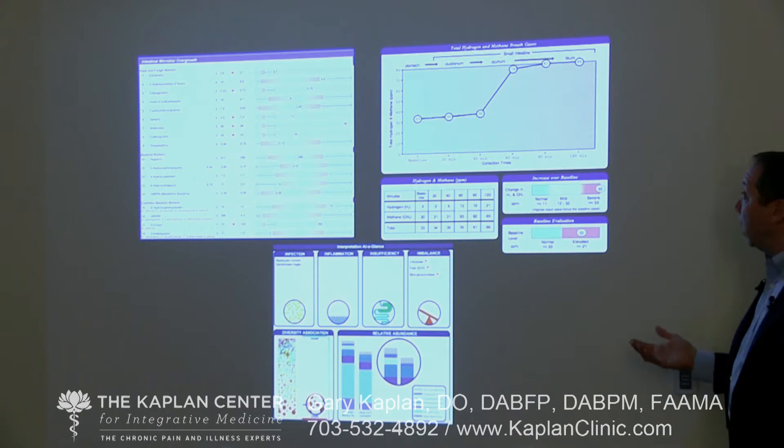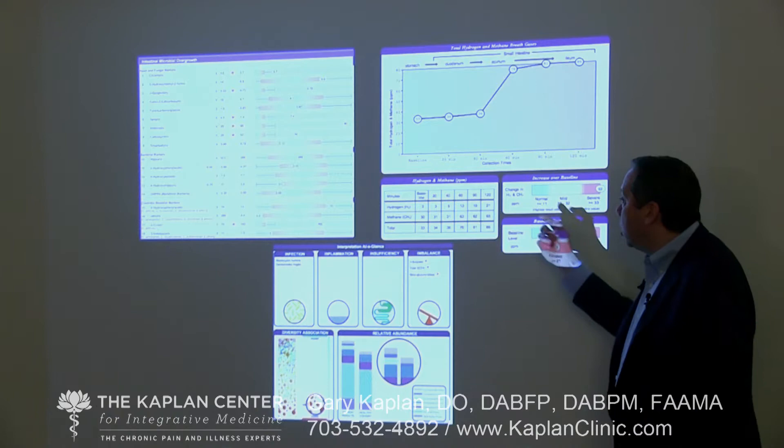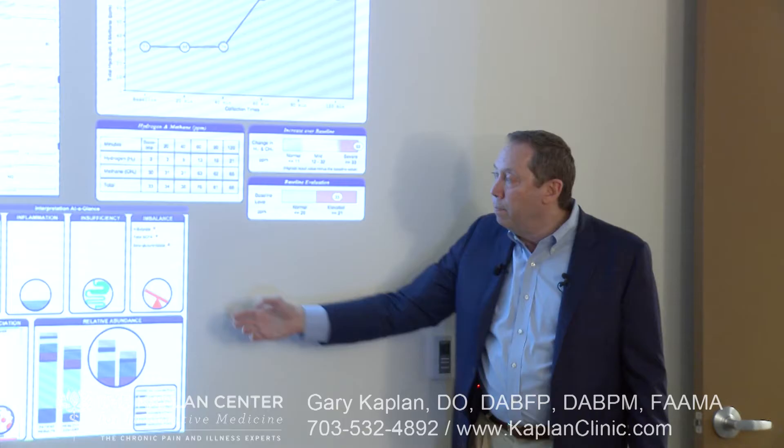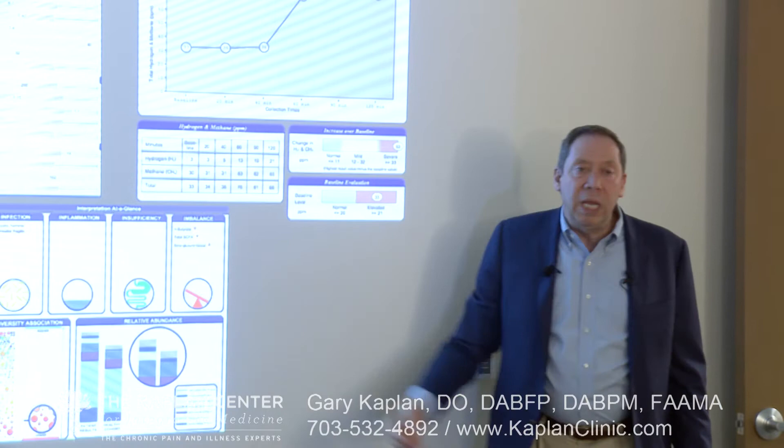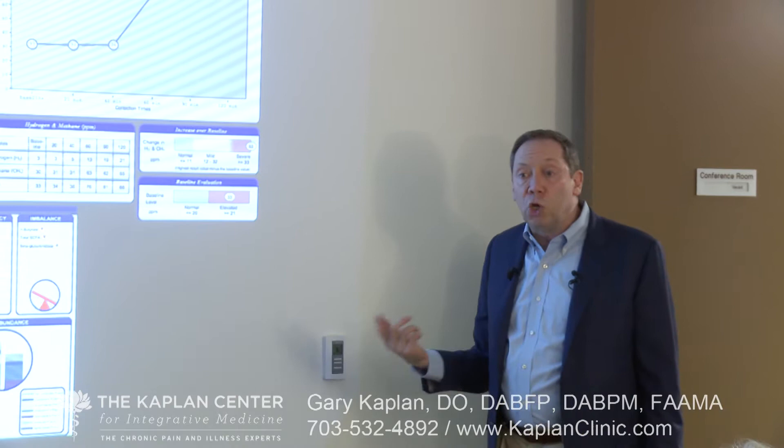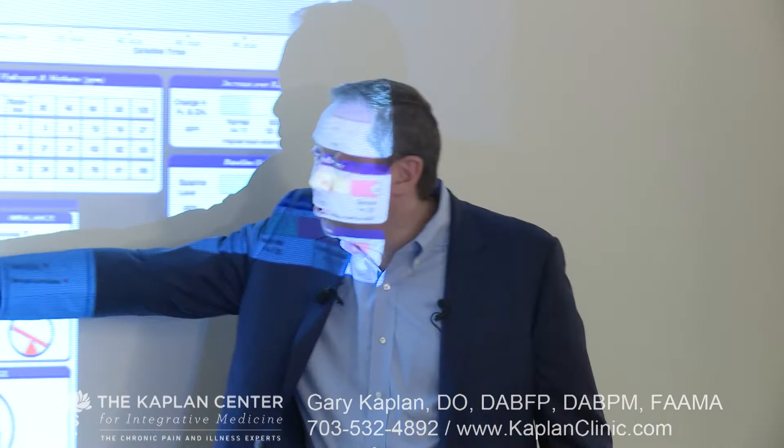This is an example of a SIBO test — small bowel bacterial overgrowth — which can come into play. We're looking at a diversity of gut issues: is there adequate pancreatic enzymes, are you digesting your fats, what is the level of butyrate and short-chain fatty acids, what's the diversity in your gut? Do you have other infections? In this particular case we see problems with parasitic infections.